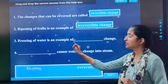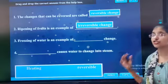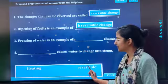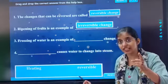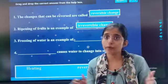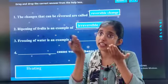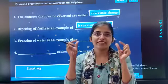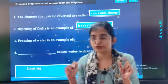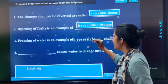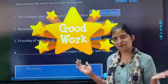Freezing of water is an example of dash change. Freezing of water when we make ice. Then it will melt and it will become water. Then again we can keep that water inside the fridge and we can get the ice cube. So it is a reversible change. I am dragging the answer and dropping it here. Good work.